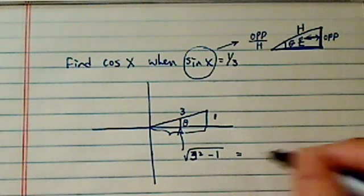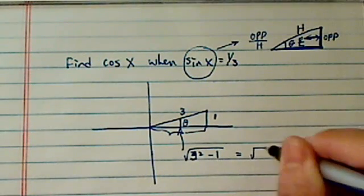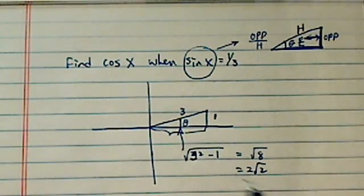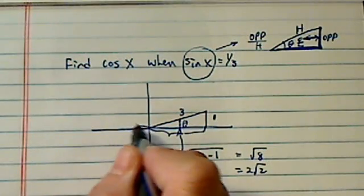Which is 9 minus 1. So this is the radical of 8, this is 2 radical 2. Now here's the problem with sine. Sine is positive in quadrant 1 and quadrant 2, because sine is really whatever is opposite.